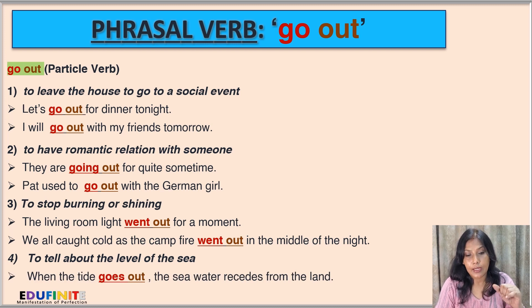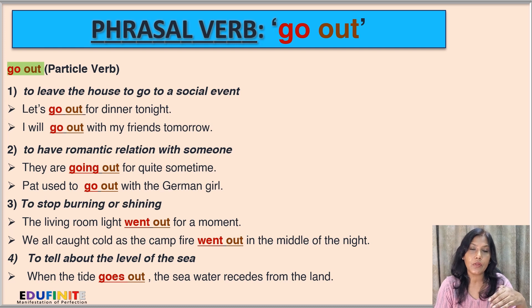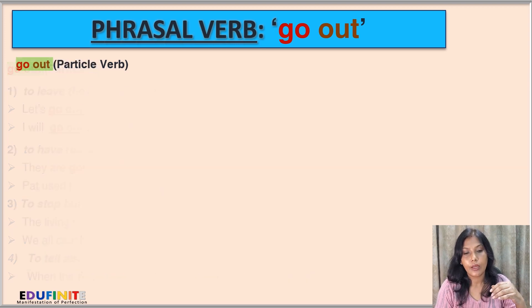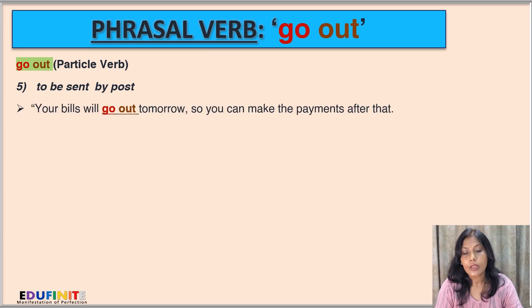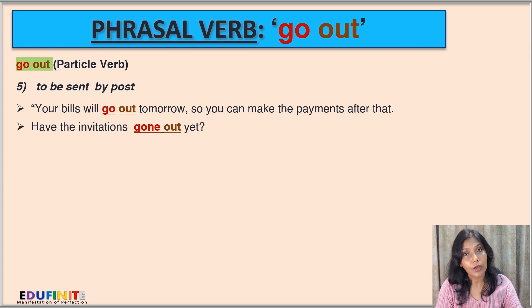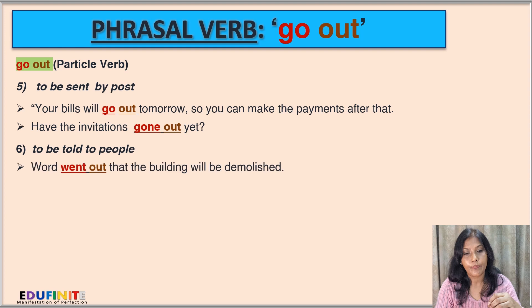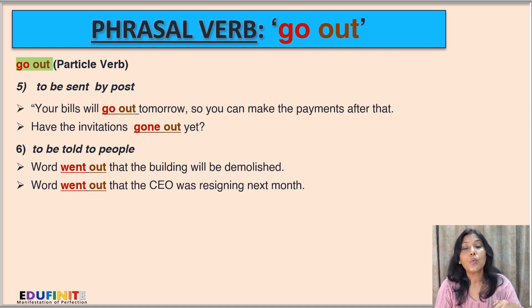Go out also means to describe the tide: when the tide goes out, the sea water recedes from the land. The next meaning is to be sent by post. Sentences: Your bill will go out tomorrow — you can make payments after that. Have the invitations gone out yet? The next meaning is to be told to people. Sentences: Word went out that the building will be demolished. Word went out that the CEO was resigning next month.